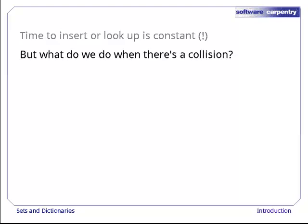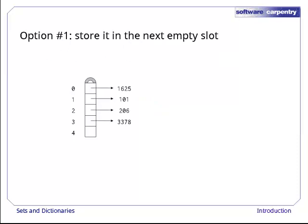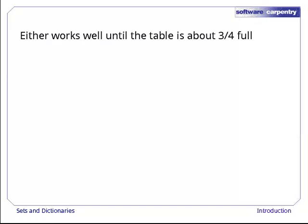But what do we do when there's a collision? For example, if we want to add 206 to our set, it ought to go in position 1, but that's already occupied by 101. There are basically two ways to handle this. The first is to search forward from the location the value is supposed to be in until we find an empty slot and store the value there. The second is to store a list of values in each slot.